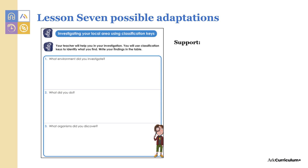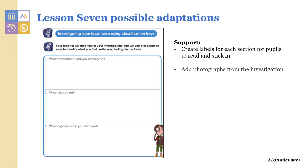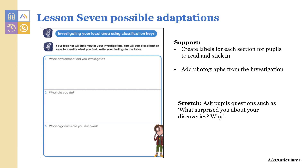To support pupils in lesson seven, you could create labels for each section for pupils to read and stick in, and you could add photographs from the investigation. Stretch pupils by asking them questions such as what surprised you about your discoveries and why.